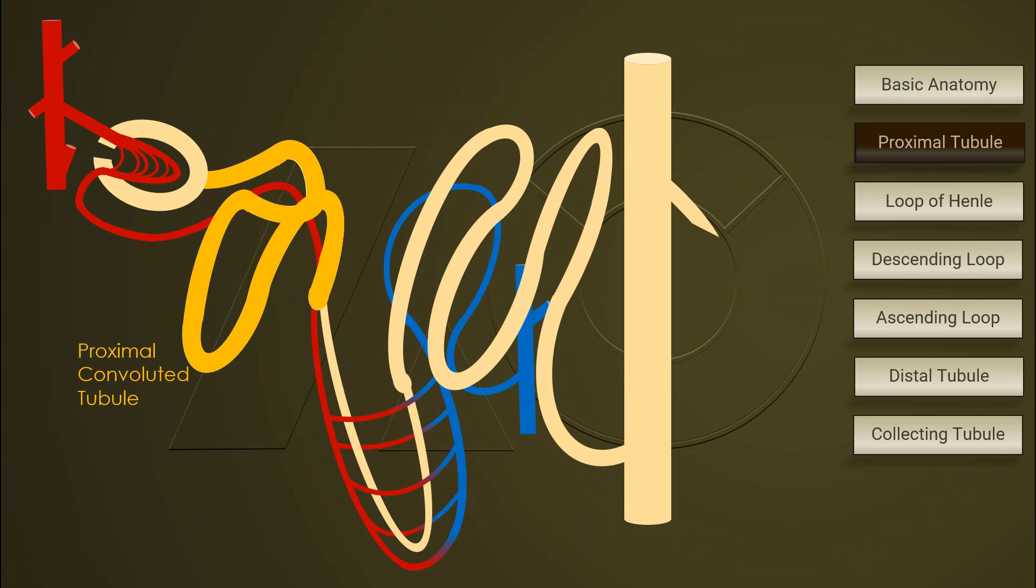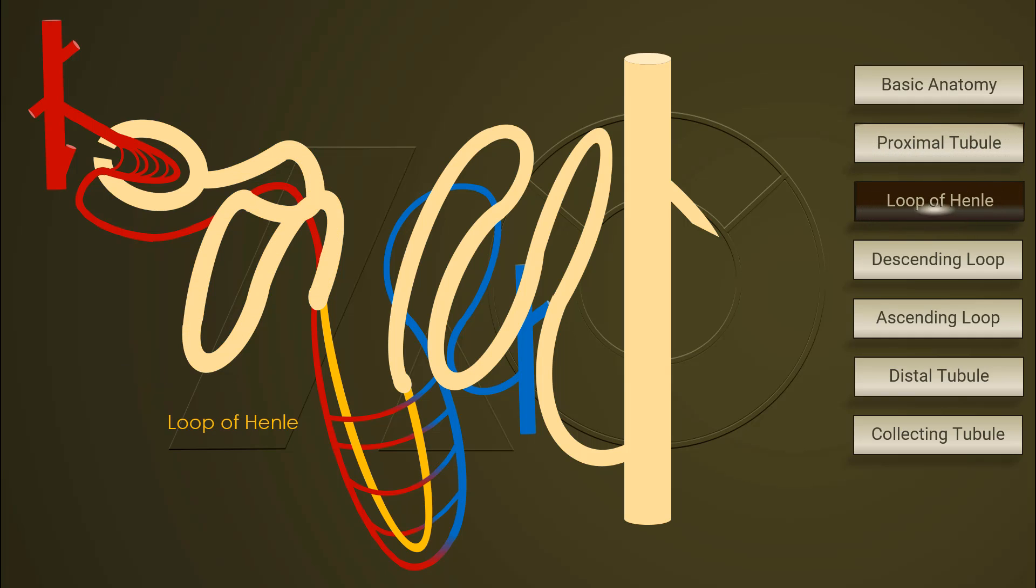Now we are going to explore the next segment in the nephron, the loop of Henle. Loop of Henle is further divided into ascending and descending loops. Electrolytes and water movements are quite different in descending and ascending loops of Henle. We will treat them as two unique segments.